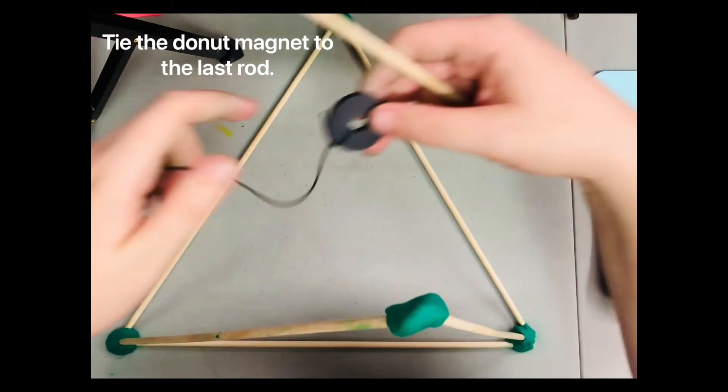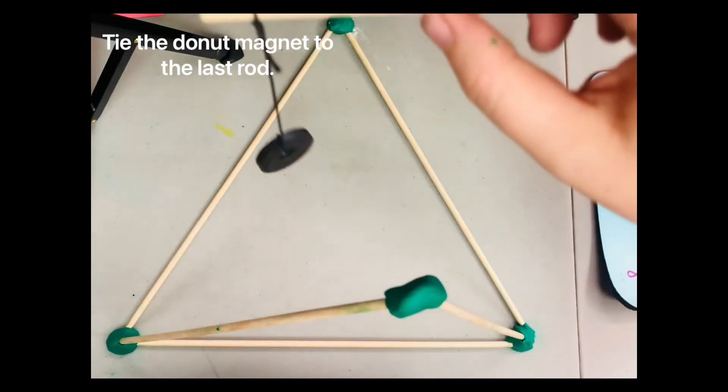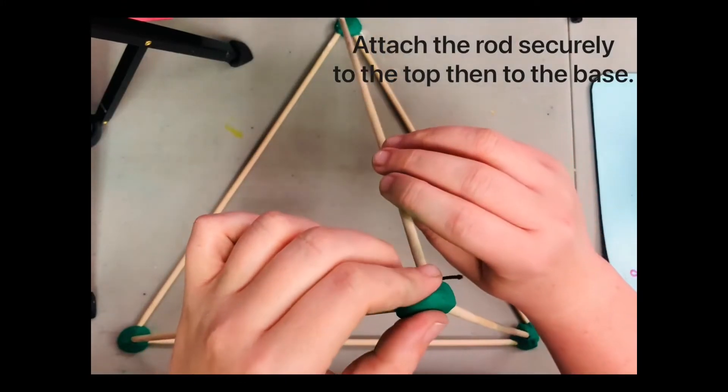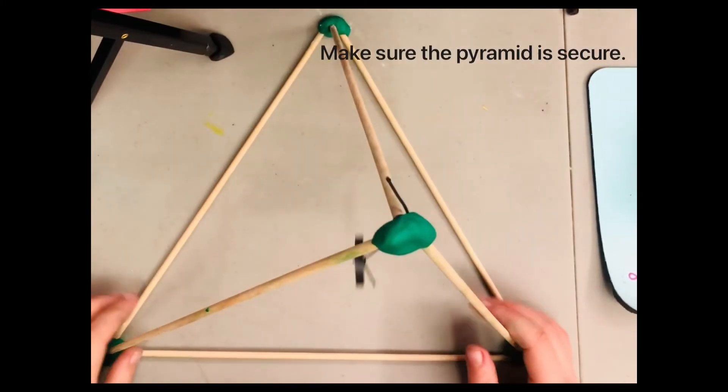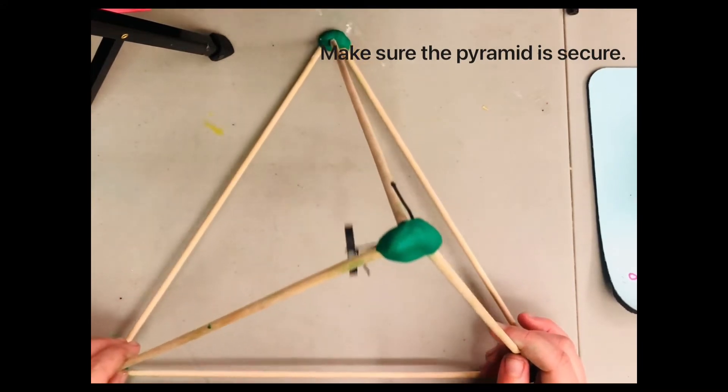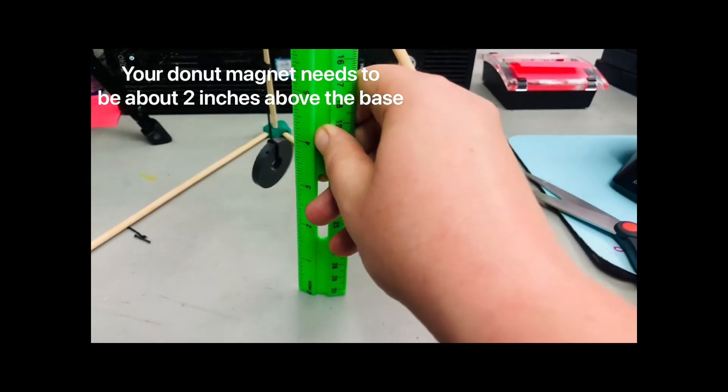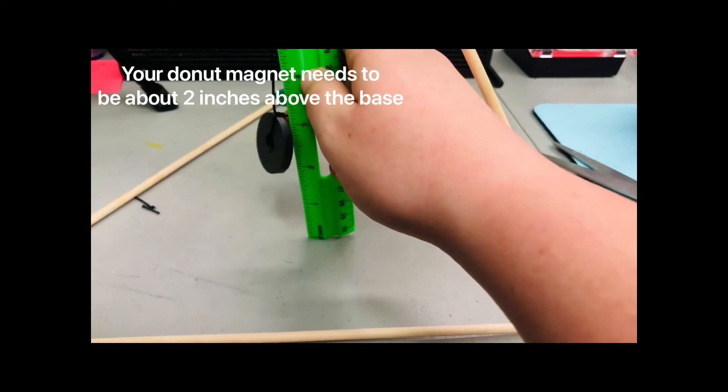Take your last dowel and tie the donut magnet to the end of it. Then connect the dowel to the clay at the top and then to the bottom. Make sure everything is securely connected. Your donut magnet needs to be hanging about two inches above the base.